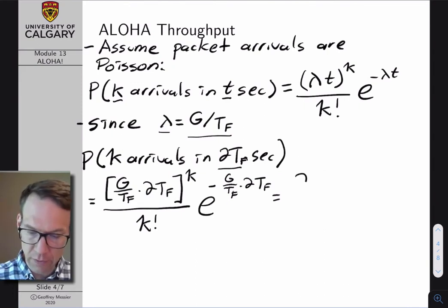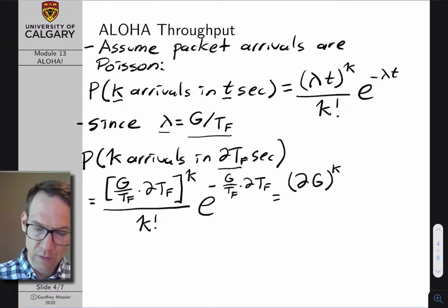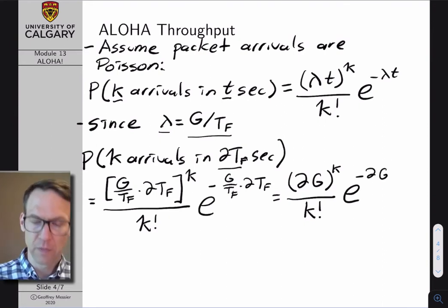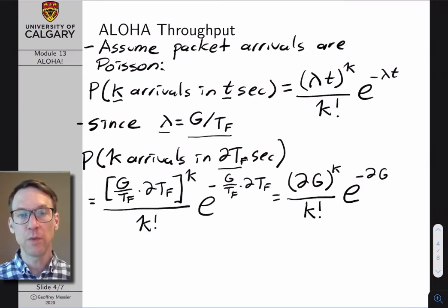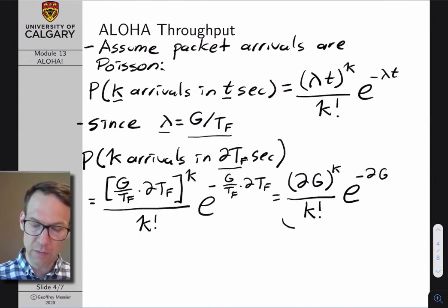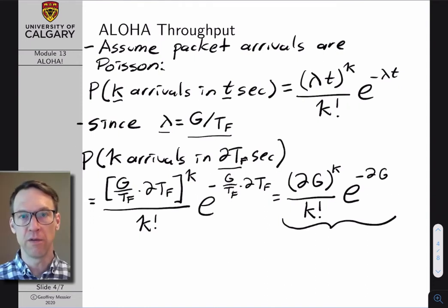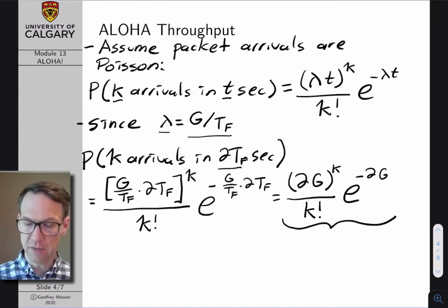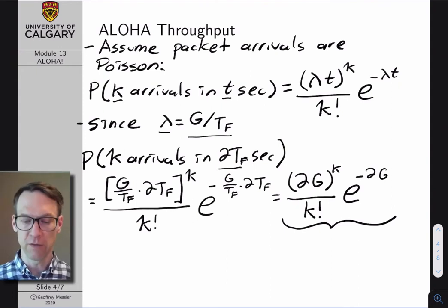After cancellation, the expression becomes (2G)^k / k! * e^(-2G), which is independent of frame time. This more compact expression, no longer dependent on the specific frame length, will be incorporated into our overall throughput expression in the next step — and it's very directly related to the probability of a collision.